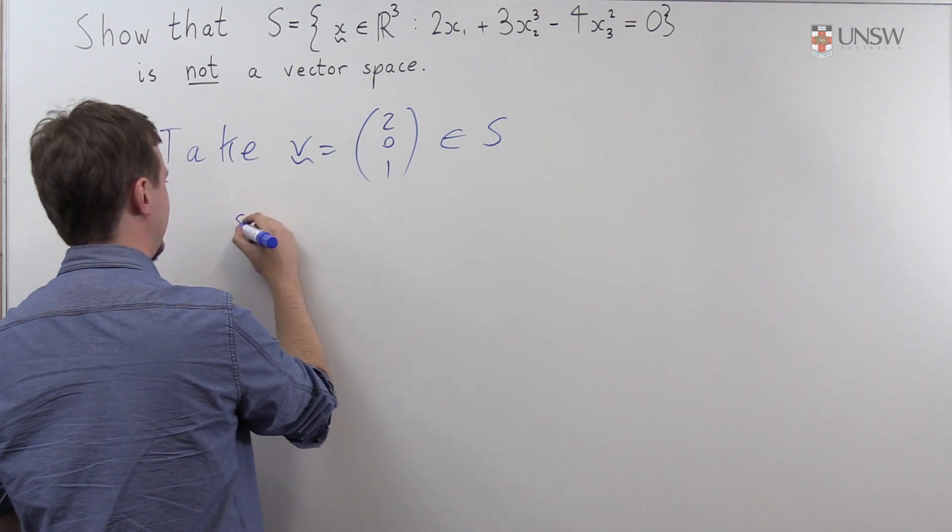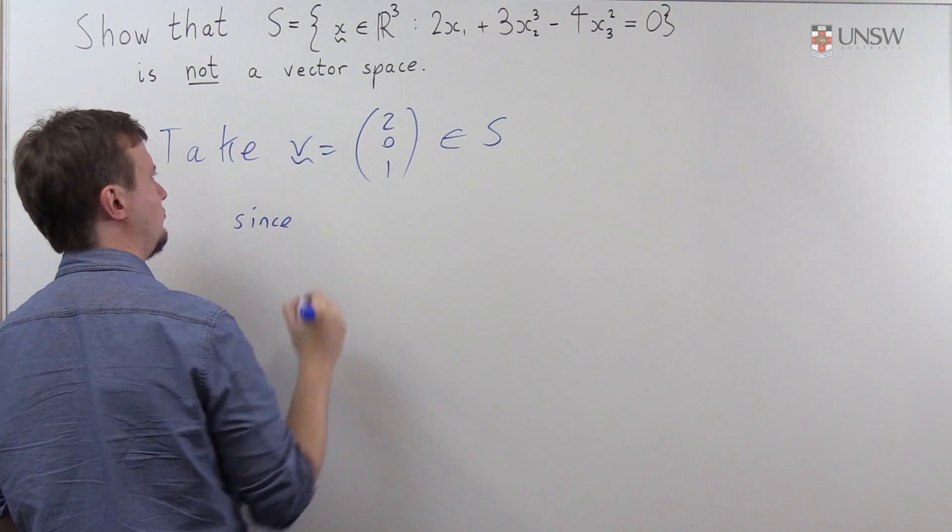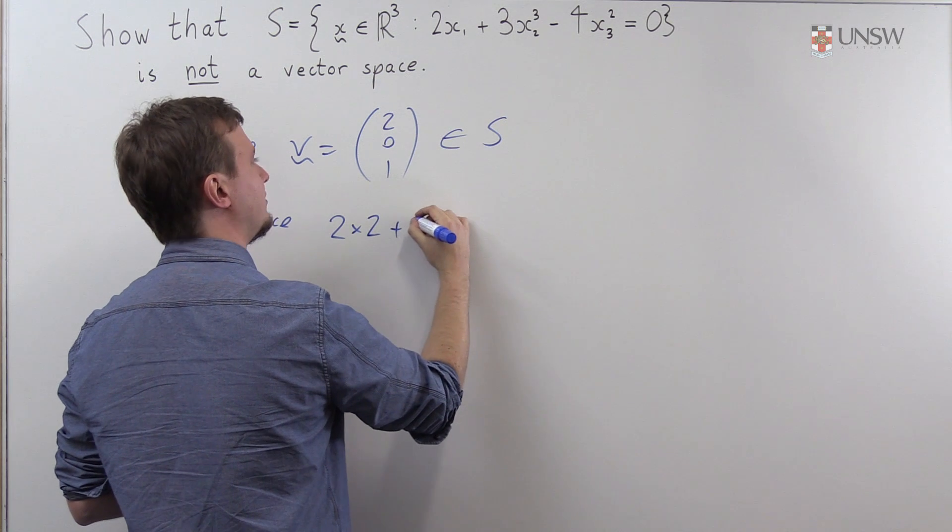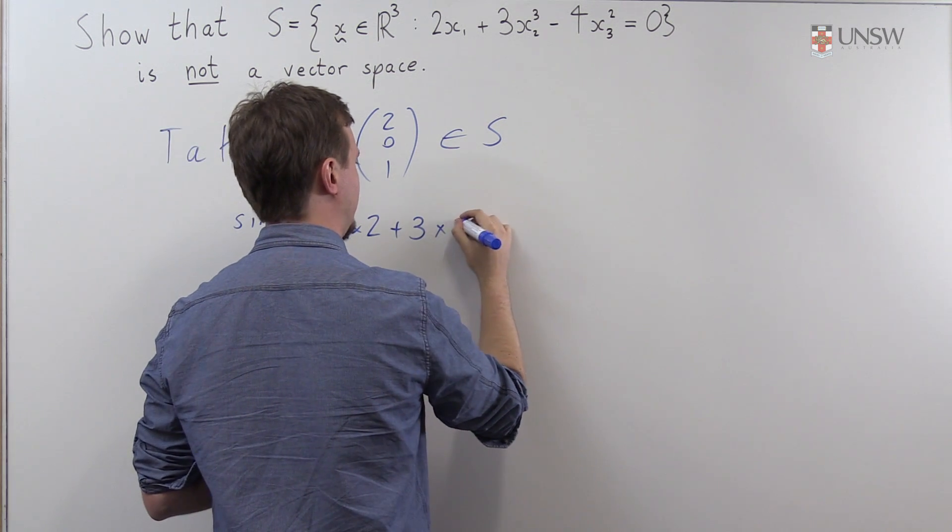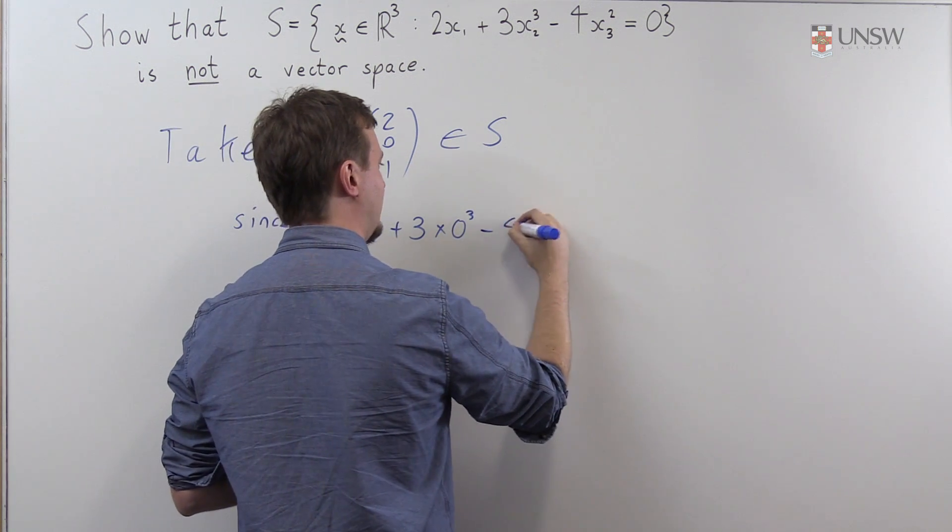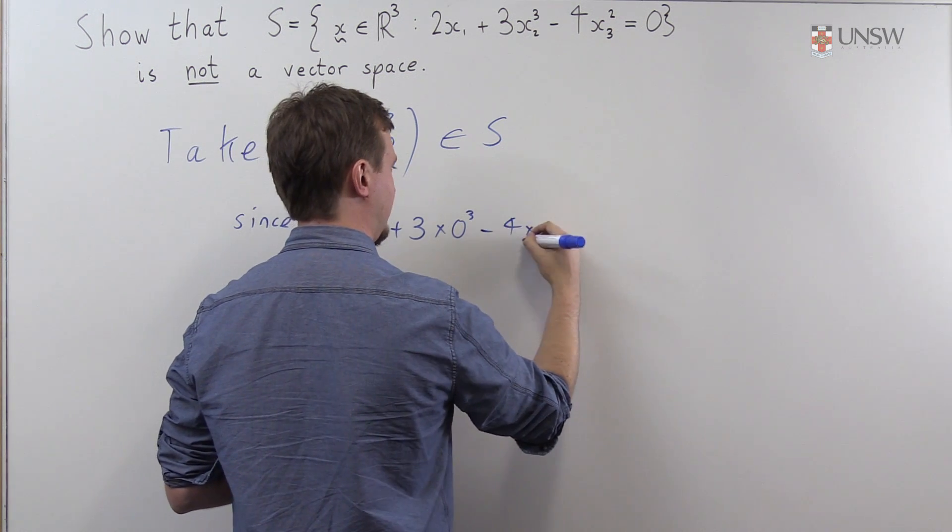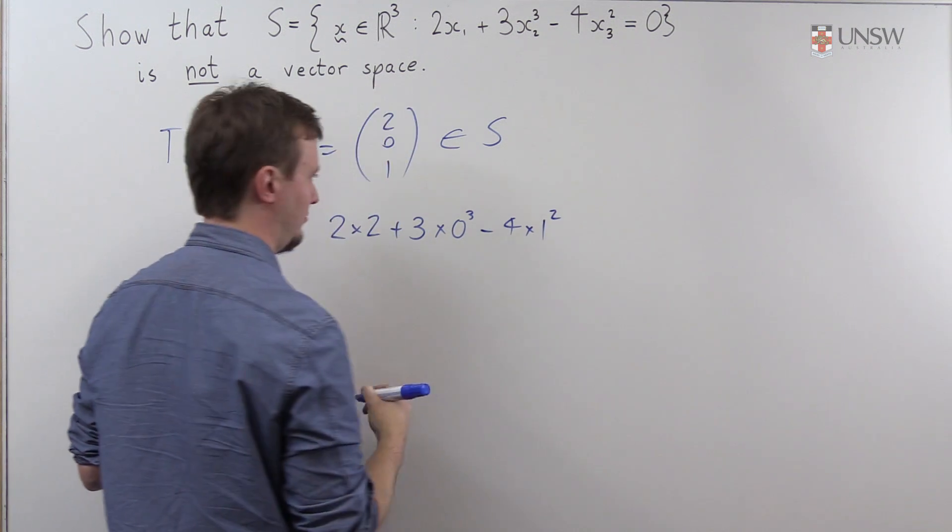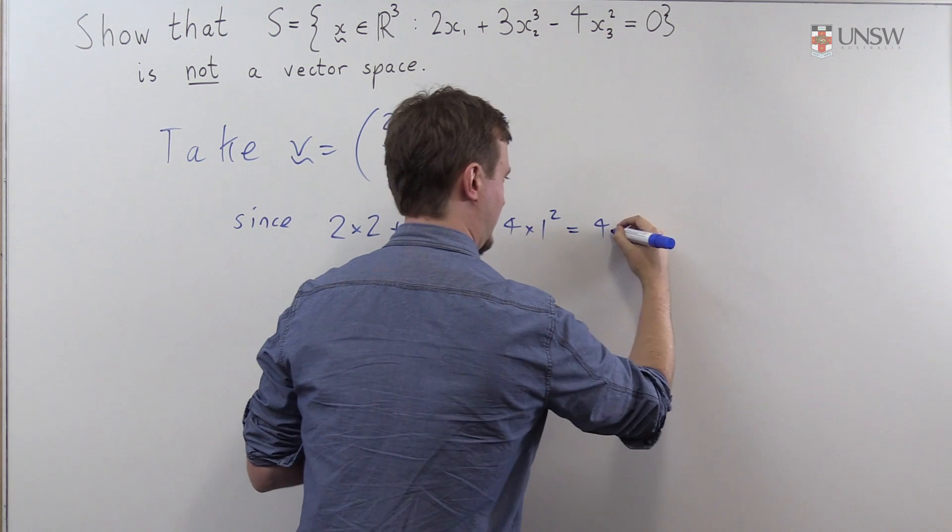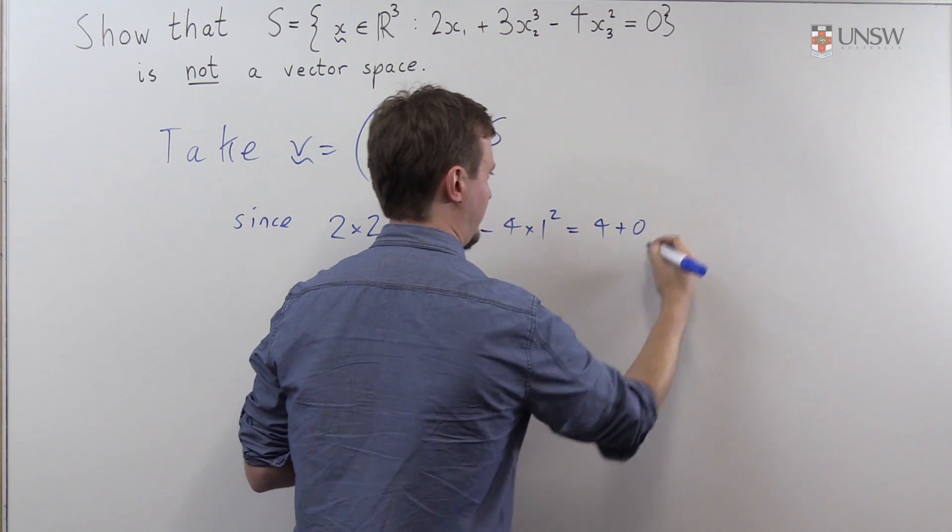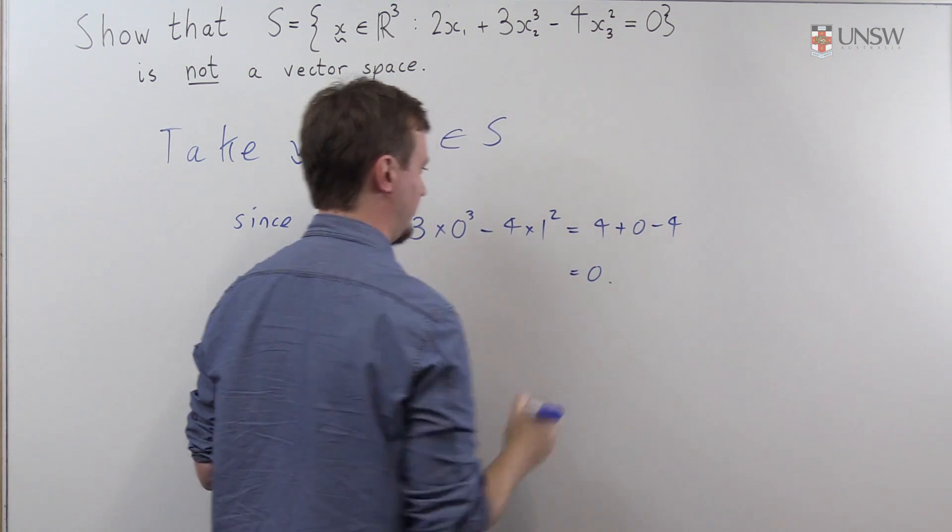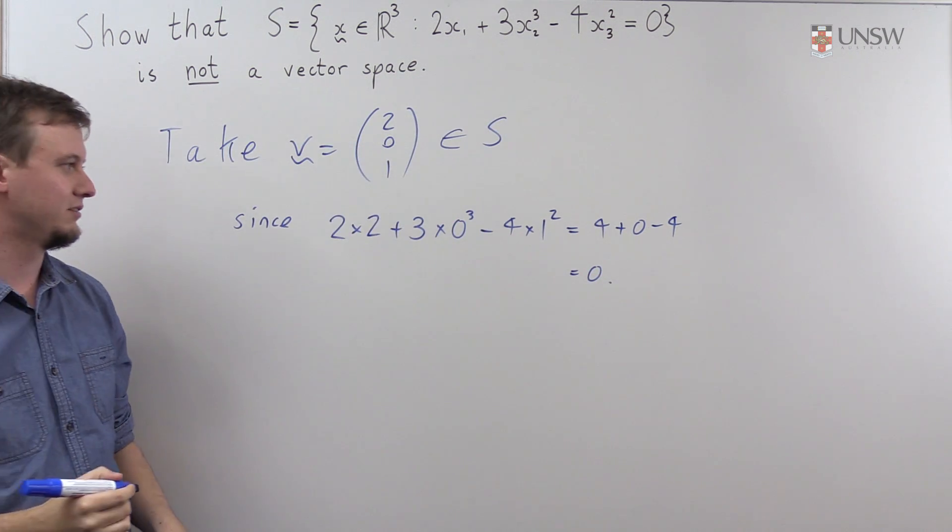since 2 times 2 plus 3 times 0 cubed, so second component cubed, minus 4 times 1 squared, what is that? That's 4 plus 0 minus 4, which is 0. So yes, this vector is in the set S.